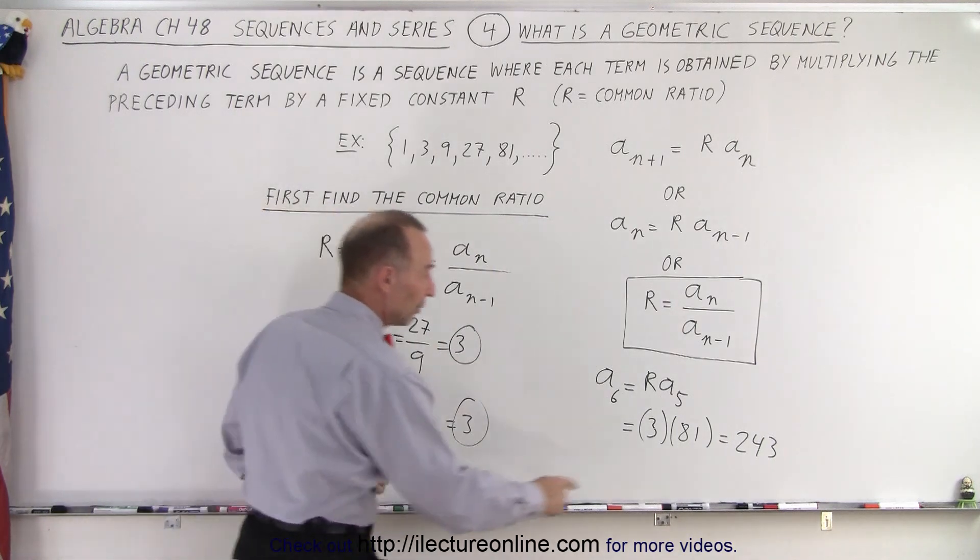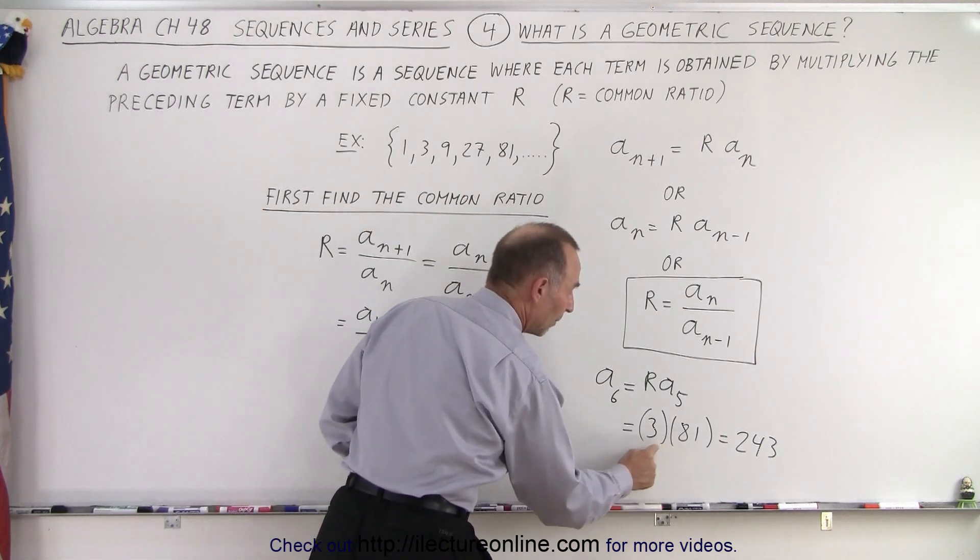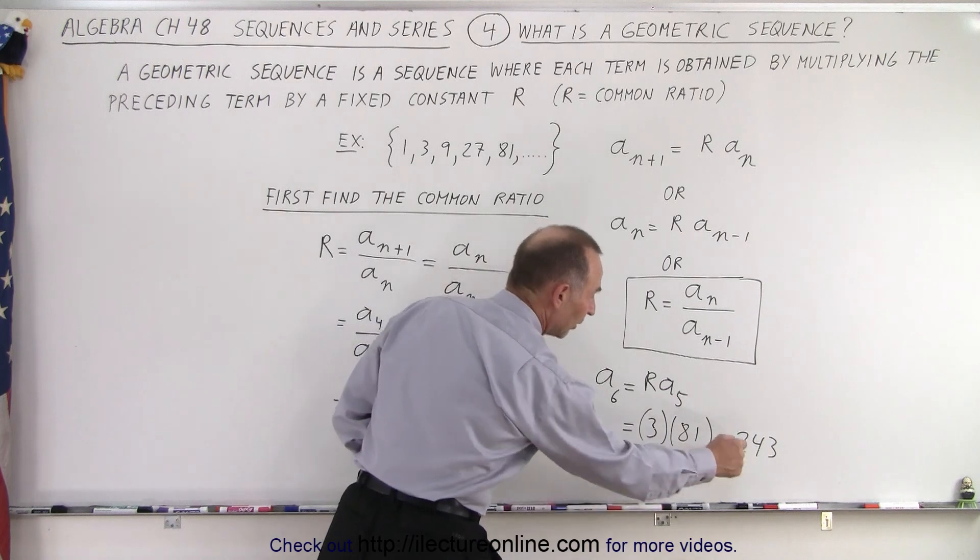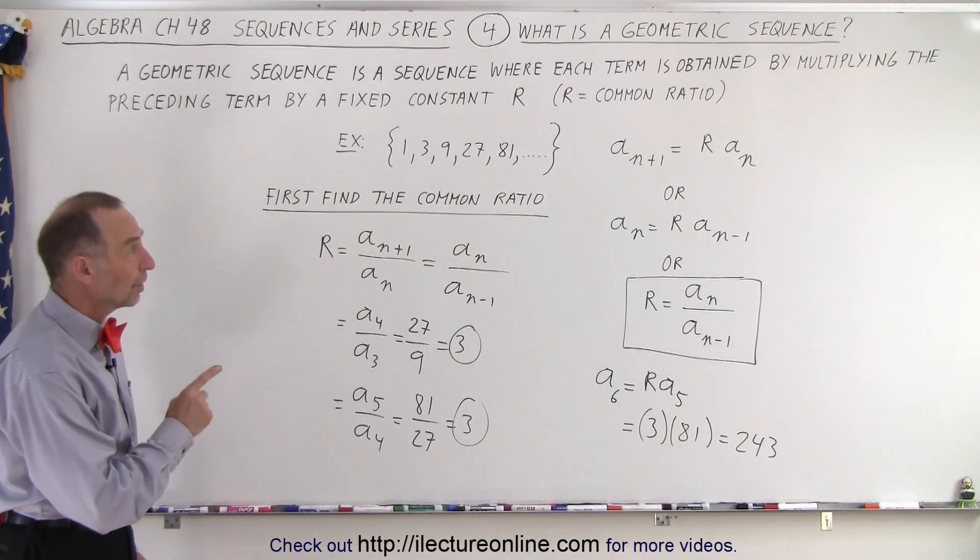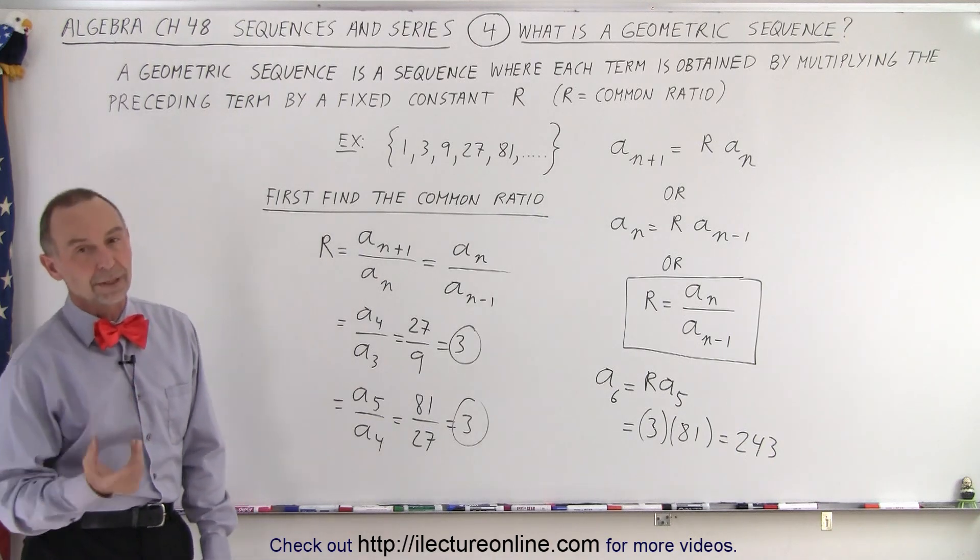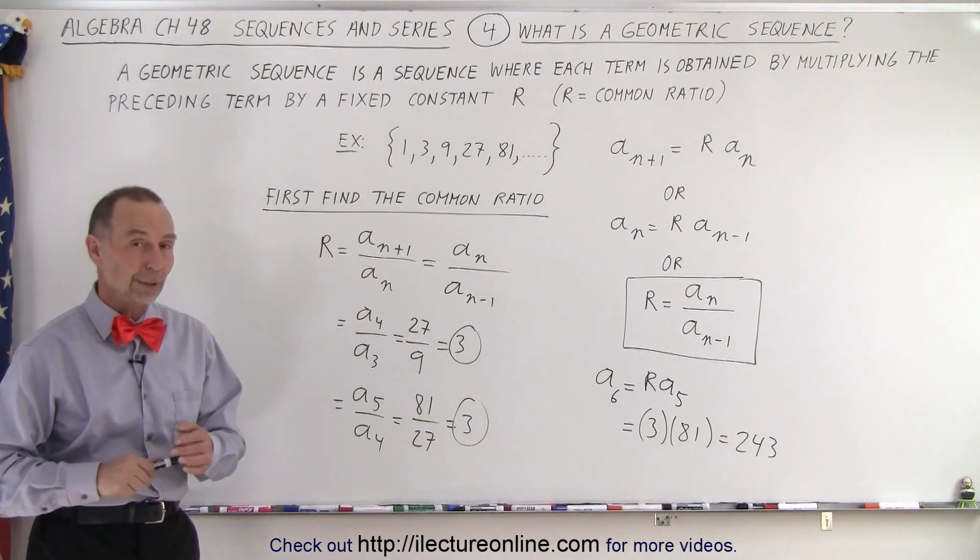because all we have to do is take the previous term and multiply it times the common ratio to get the next one. And so when we have a situation like that, we're dealing with a geometric sequence, not an arithmetic sequence. And that's the difference between the two.